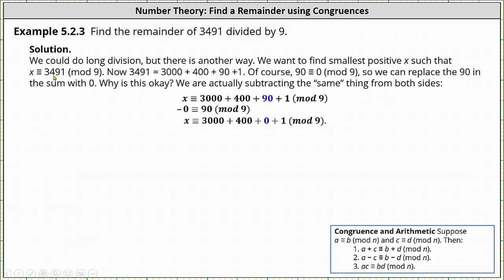We first write 3,491 in expanded form: 3000 + 400 + 90 + 1. Looking at the sum, notice that 90 is a multiple of 9, and therefore 90 ≡ 0 (mod 9). When 90 is divided by 9, the remainder is 0, so we can replace 90 in the sum with 0.